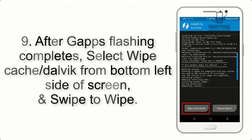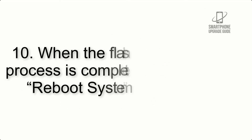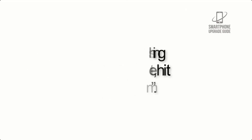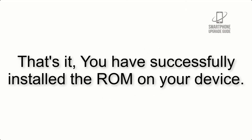Step 9: After GApps flashing completes, select Wipe Cache and Dalvik from the bottom left side of the screen and swipe to wipe. Step 10: When the flashing process is complete, hit Reboot System. That's it — you have successfully installed the ROM on your device.